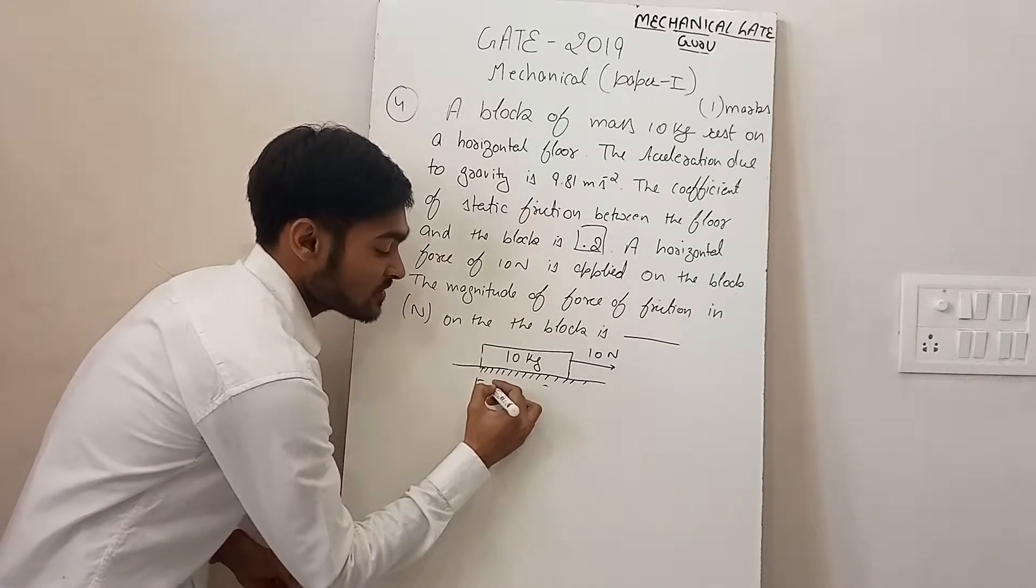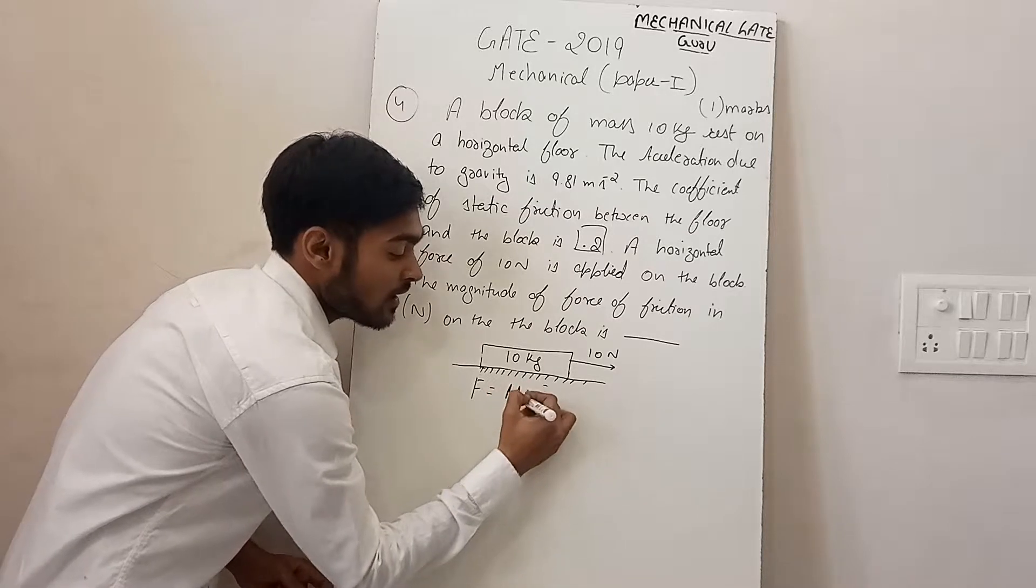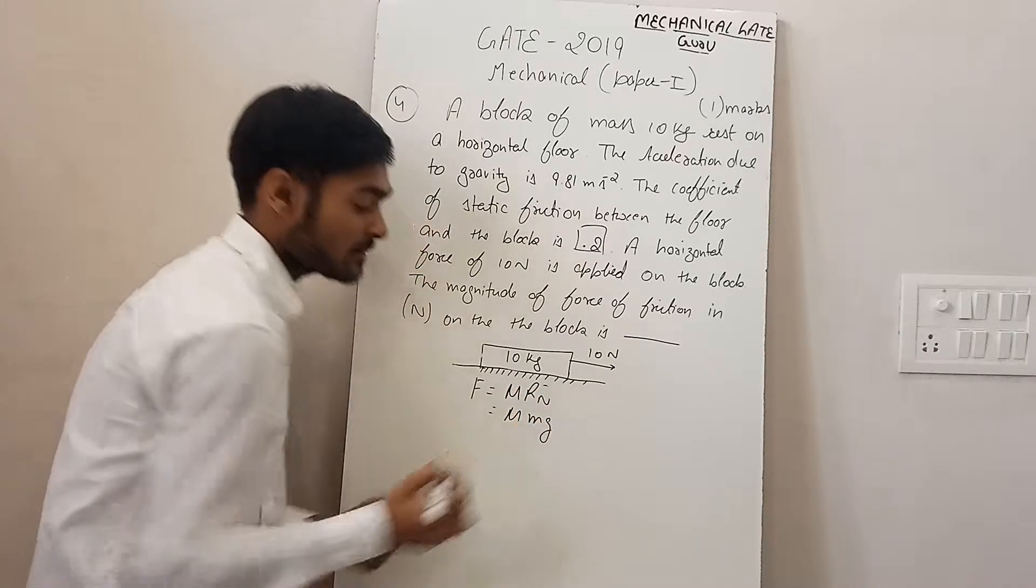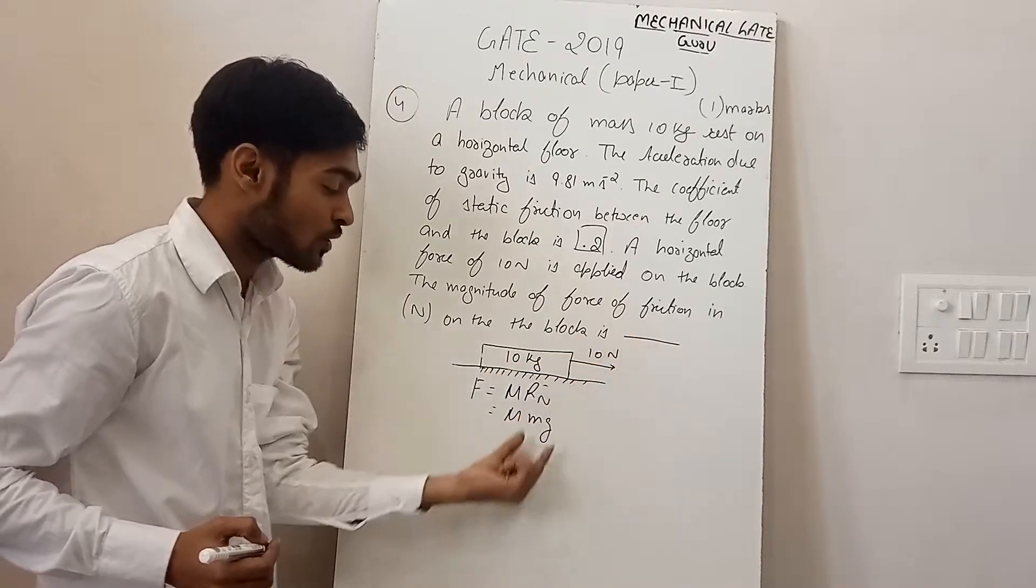Friction force is the formula of mu and N. What does N mean? Mg is the formula - mu times mg. This formula of friction force...